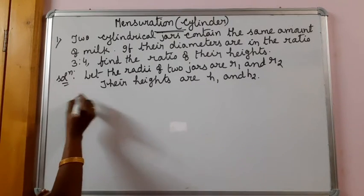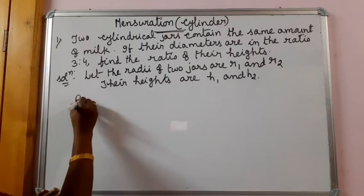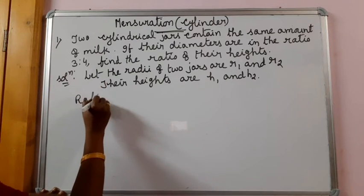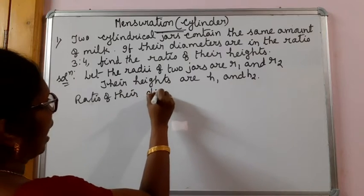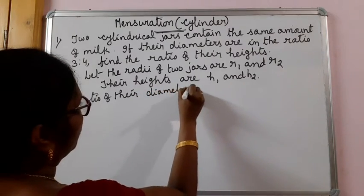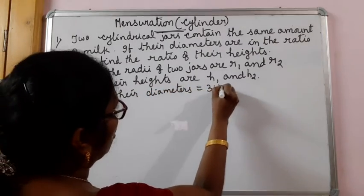Diameters means, ratio of the diameters, ratio of the diameters is equal to 3 is to 4.